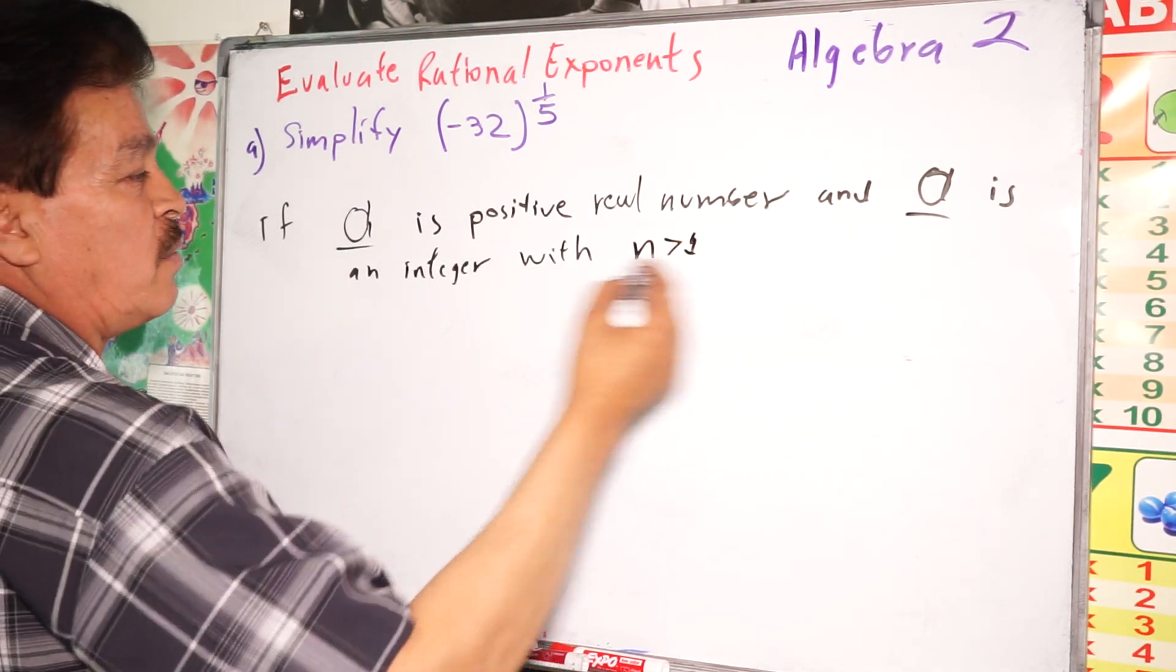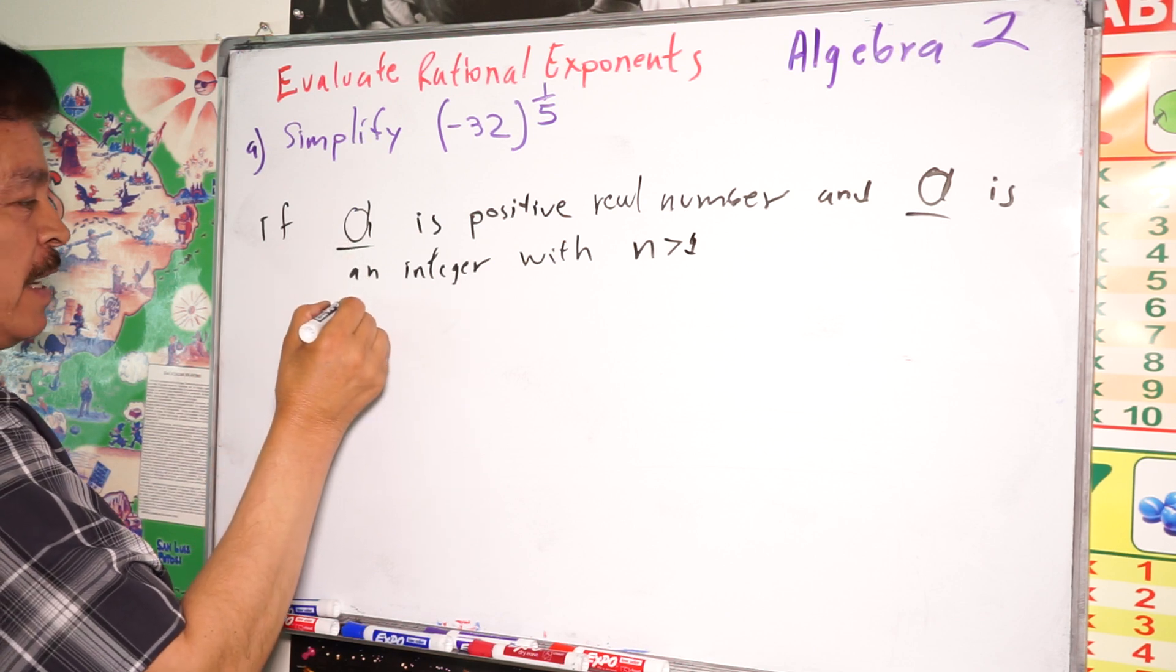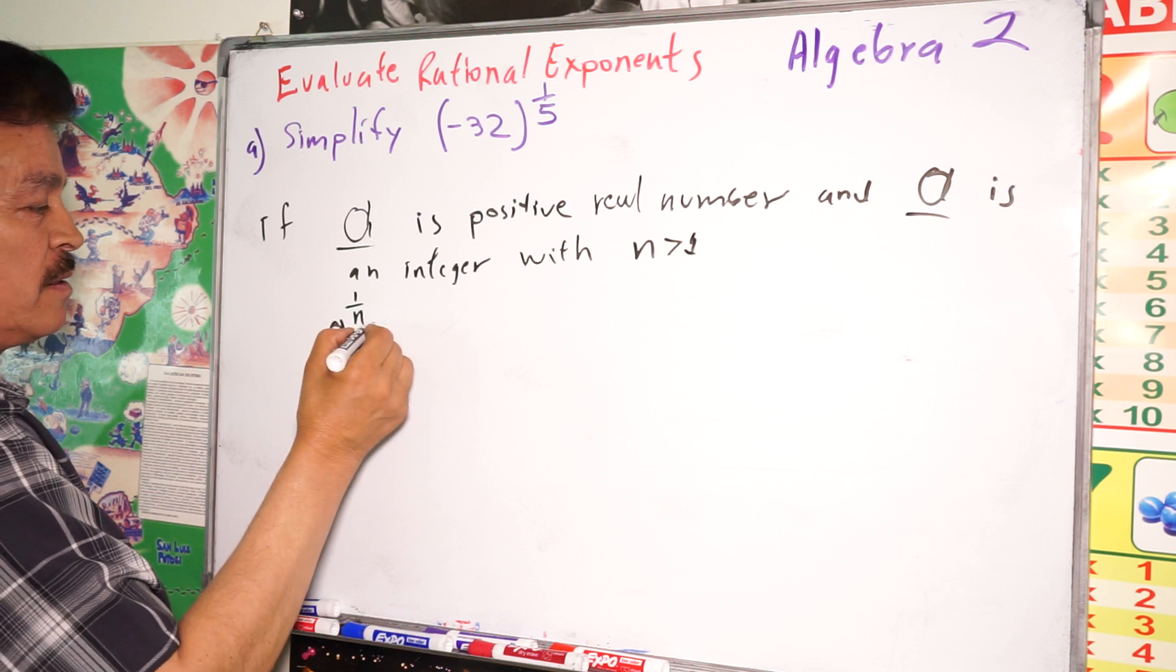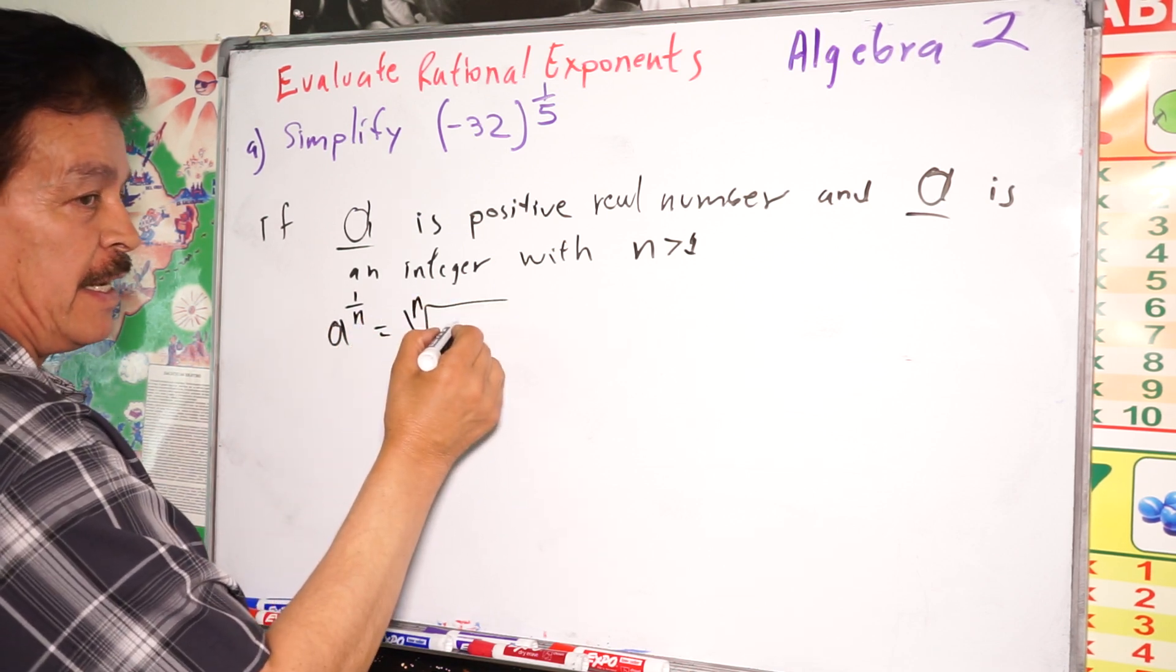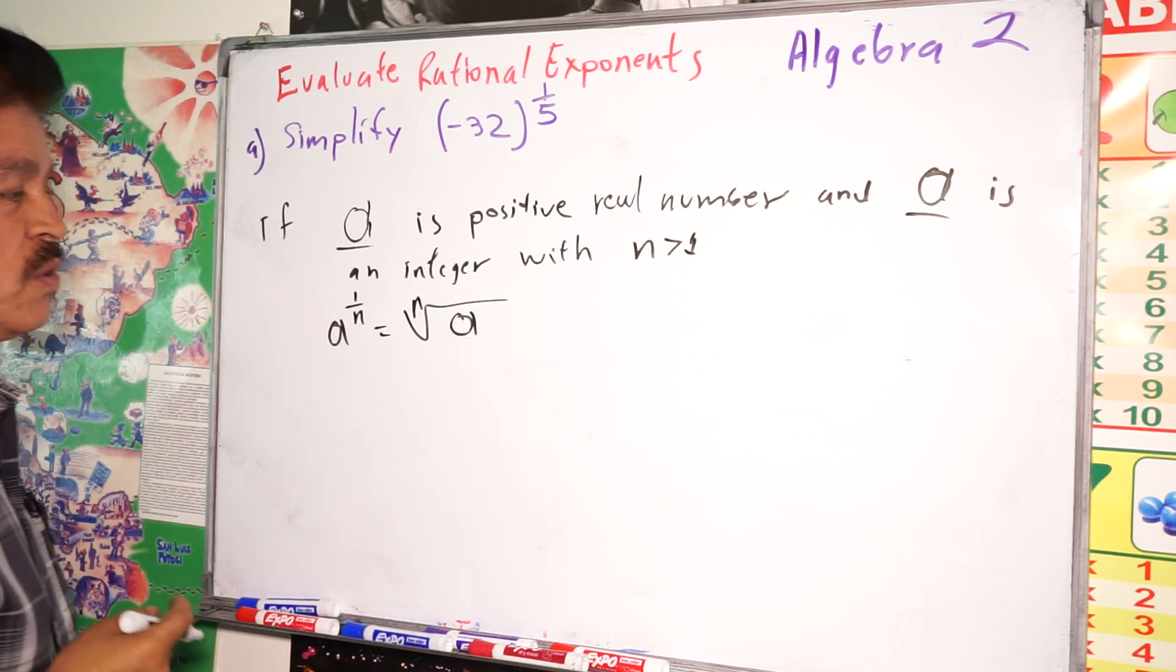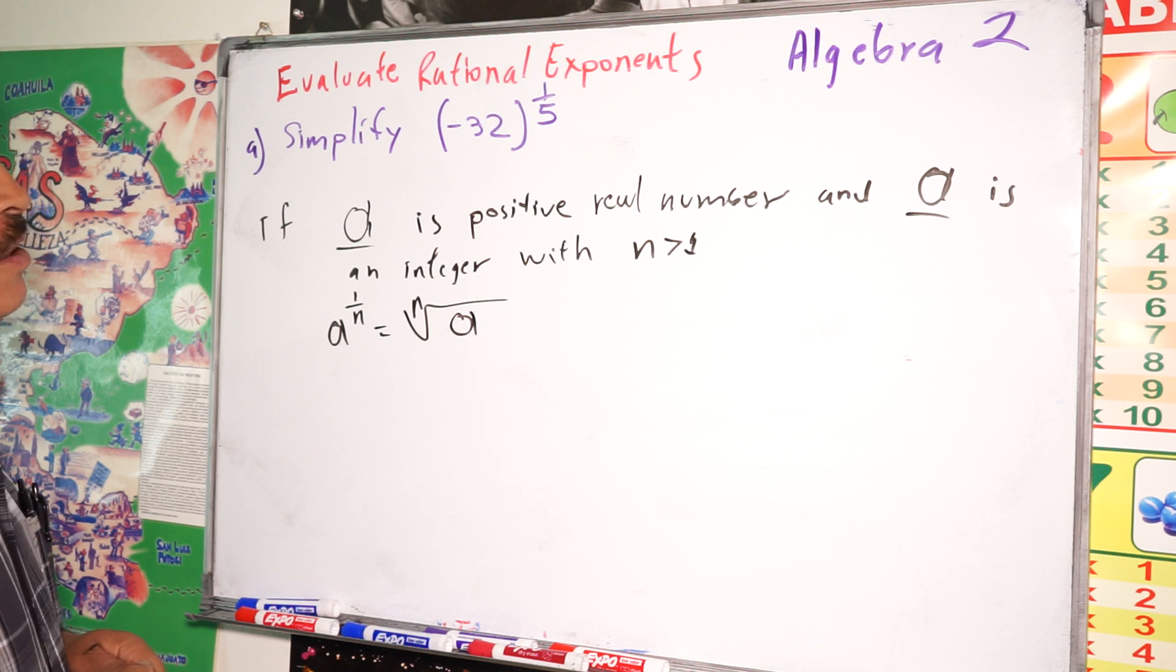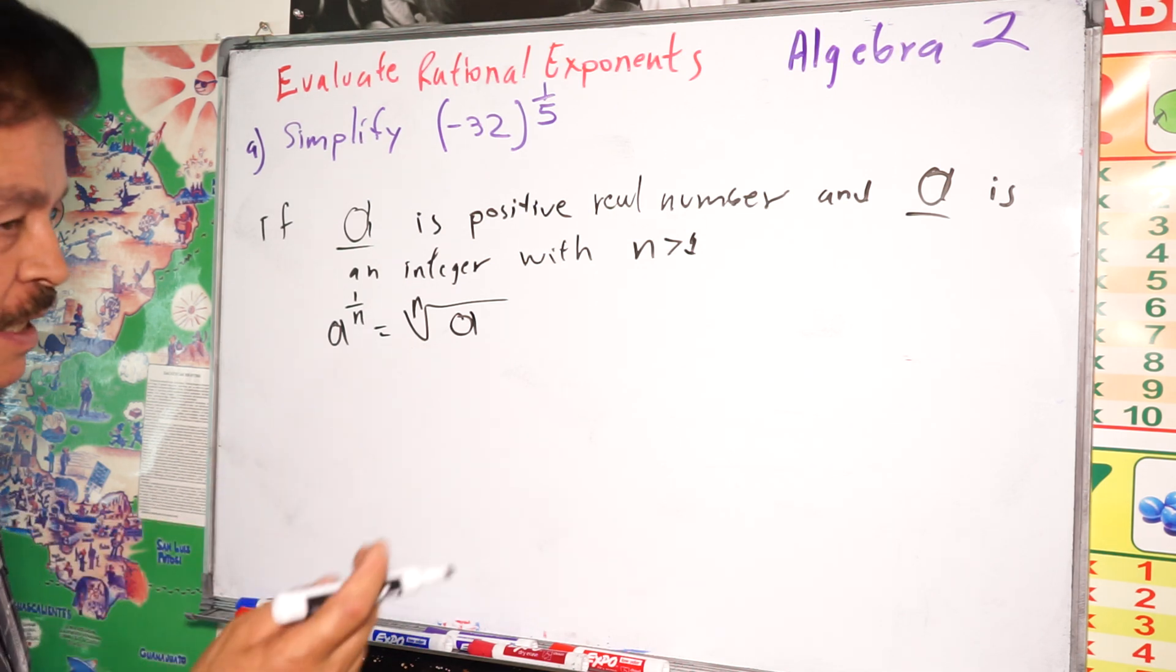Then we are going to have a^(1/n), so this equals the nth root of a, the nth radical of a. This is one point.